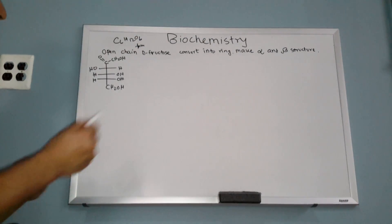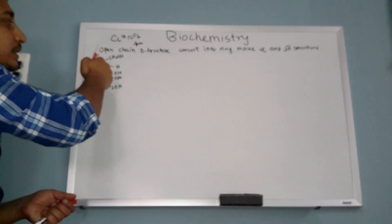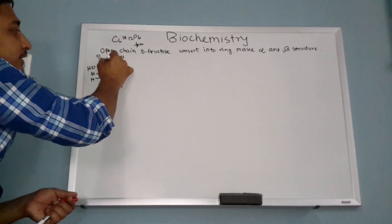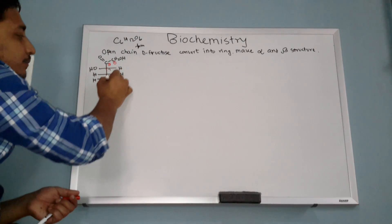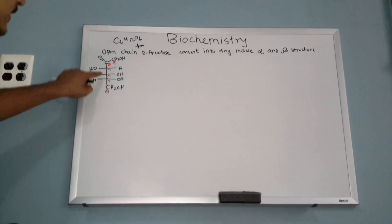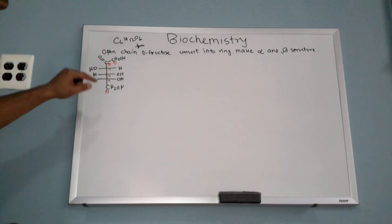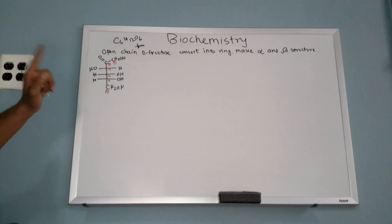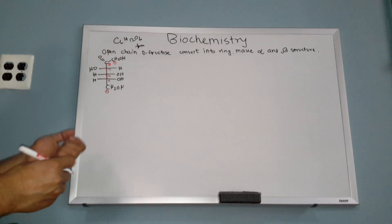Fructose is a ketone, so you have to give the lowest number to the carbonyl carbon. That's why this carbon is number one, this is two, this is three, this is four, this is five, this is six. If you count from the other side, the double bond carbon would be far away, so you count from the side where it gets the lowest number.